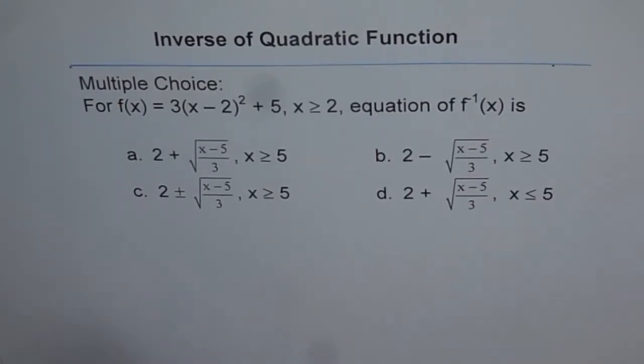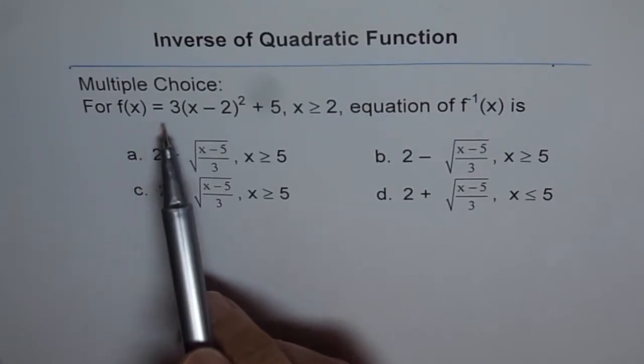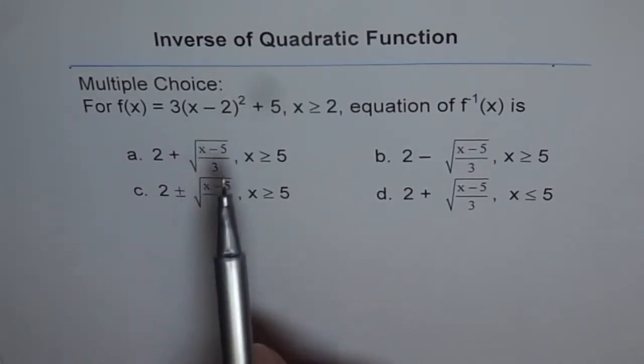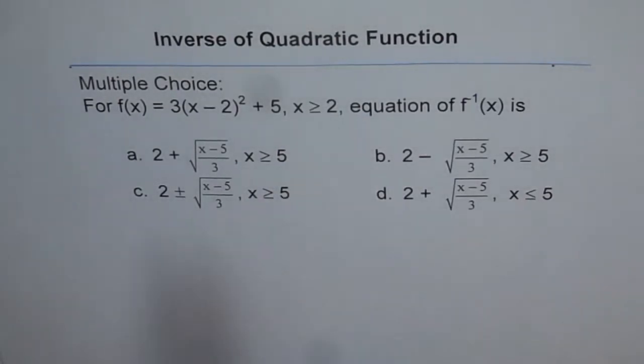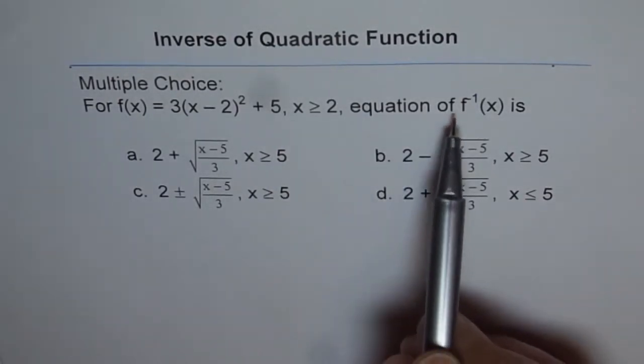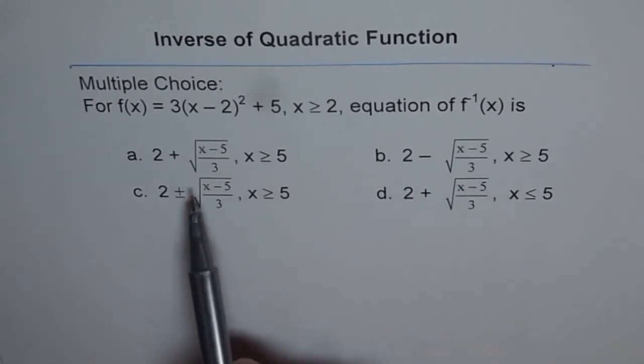Now, the question here is, for f(x) equals 3 times (x minus 2) whole square plus 5, where x is greater than or equal to 2, equation of f inverse x is. So we got 4 choices.